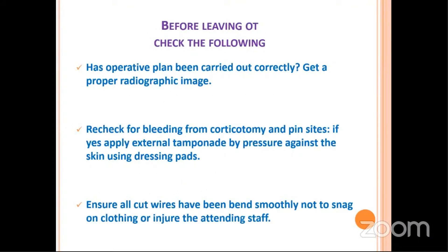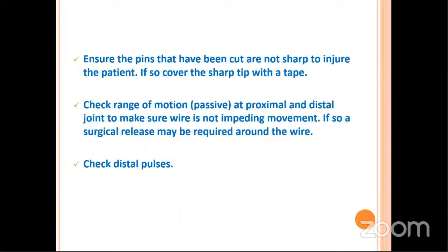It essentially starts before the patient leaves the theater. Before the patient leaves the OT, the surgeon should check several things: first, has the post-operative radiograph been carried out? Get a proper radiological image, preferably a fluoroscopic image. Check for bleeding from the corticotomy site or pin sites and apply pressure if needed. Ensure all cut wires have been cut smoothly to avoid injury, and ensure sharp pins are covered with adhesive tape.